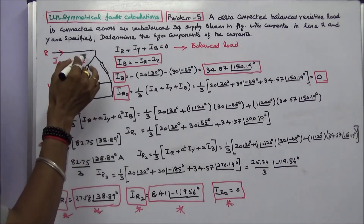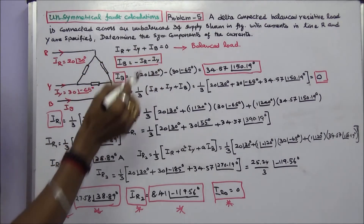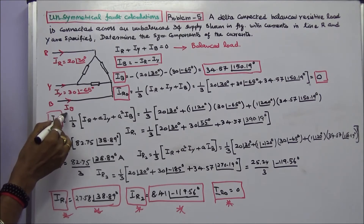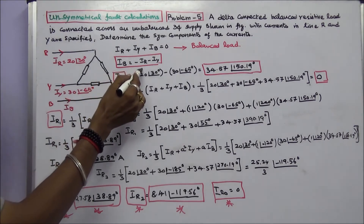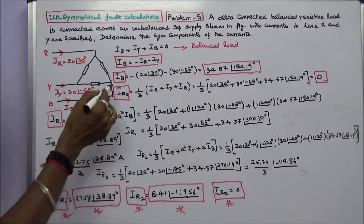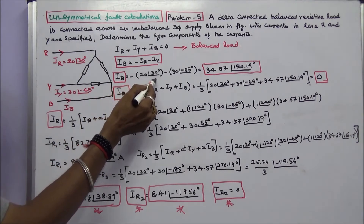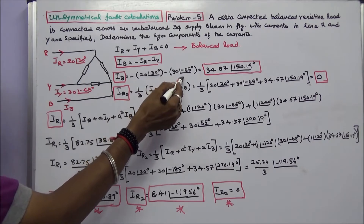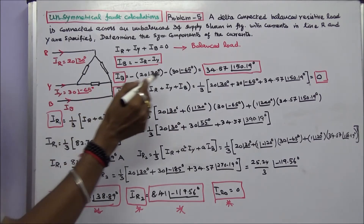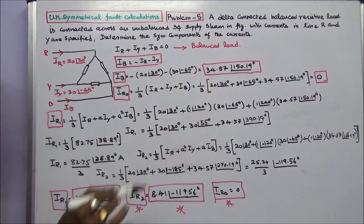In a balanced load, IR plus IY plus IB is equal to zero. Here IB is not given, so IB is equal to minus IR minus IY. Therefore IB is equal to minus 20 angle 30 degrees, minus 30 angle minus 65 degrees, giving IB equal to 34.57 angle 150.19 degrees.